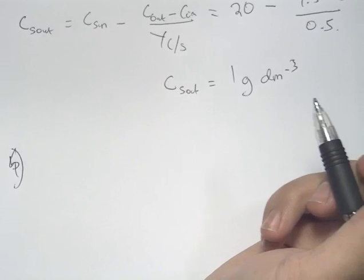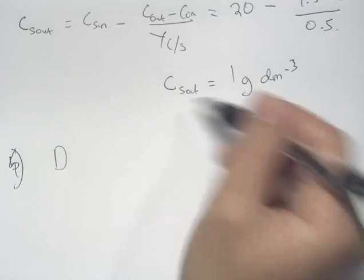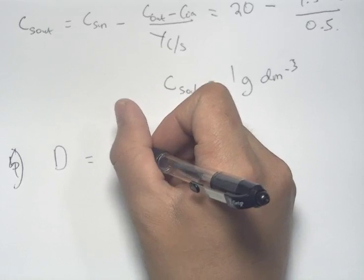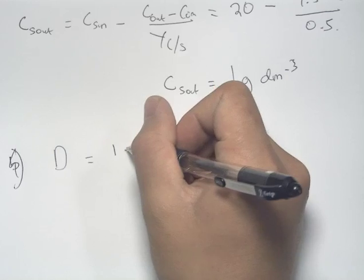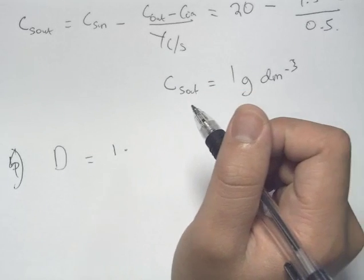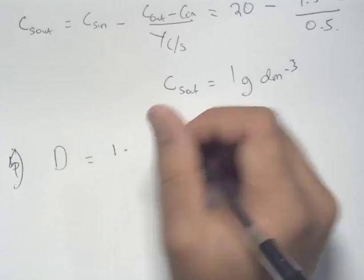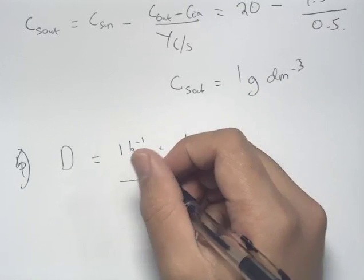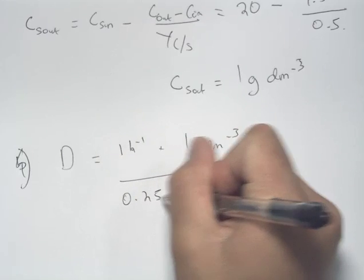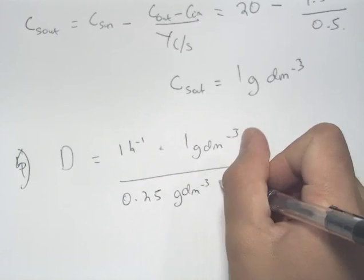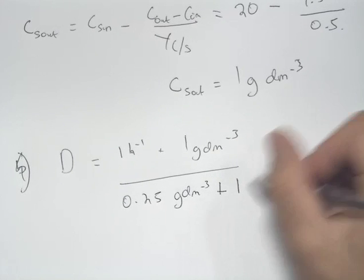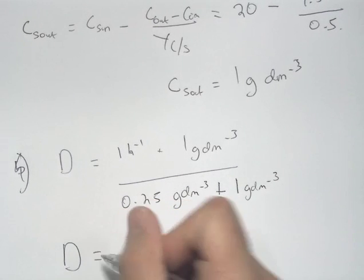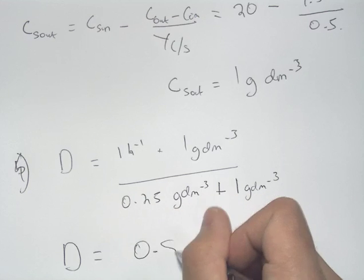We can then use this to find the dilution rate by substituting our value of substrate out into the Monod equation. The maximum specific growth rate mu max is 1 h⁻¹, multiplied by 1 g/dm³ over Ks of 0.25 g/dm³ plus 1 g/dm³. This gives a dilution rate D equal to 0.8 hours to the minus 1.